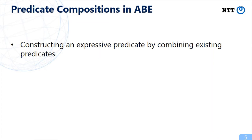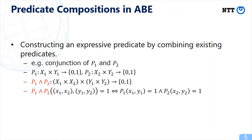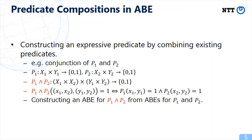What we want to do in this work is constructing an expressive predicate by combining existing predicates. Let us give an example of a conjunction of predicates. Let P1 and P2 be predicates. Consider a conjunction of P1 and P2, which is satisfied if P1(x1, y1) equals 1 and P2(x2, y2) equals 1. Our goal is to construct an ABE for P1 and P2 from ABE schemes for P1 and P2.